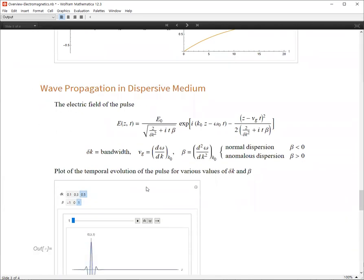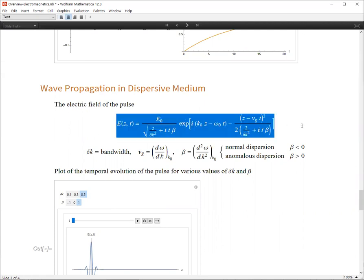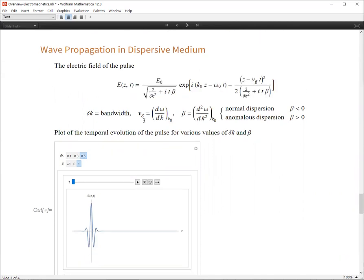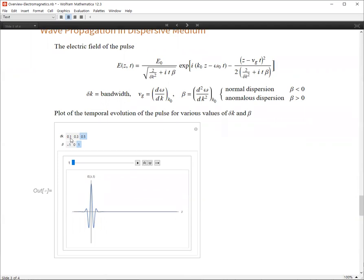By using Maxwell's equations, we can derive the solution for wave propagation in a dispersive media. Well, I skipped all the details. The electric field of the pulse is given by this formula. So delta k is the bandwidth. This is the group velocity. And beta is for the dispersion. And this is negative for normal dispersion and positive for anomalous dispersion.